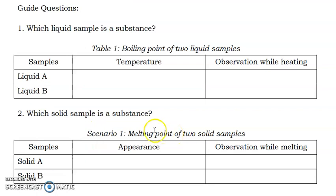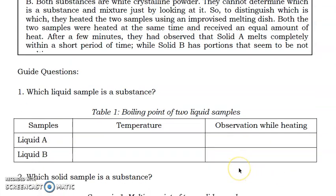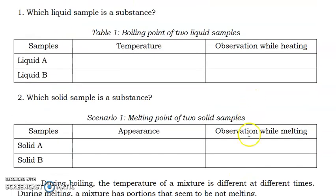So, it's very obvious. And then, write down the observation regarding the changes in the temperature, if there is, while the liquid is being heated. And then, for number 2, which solid sample is a substance? So, you're going to refer to the scenario number 1. So, solid A or solid B? And then, again, dito sa table, pakicomplete. So, we have the two samples, solid A and B. What is the appearance based on the scenario 1? Naka-indicate naman dyan. Then, write down the observation while the liquid A and B is heated or was heated.